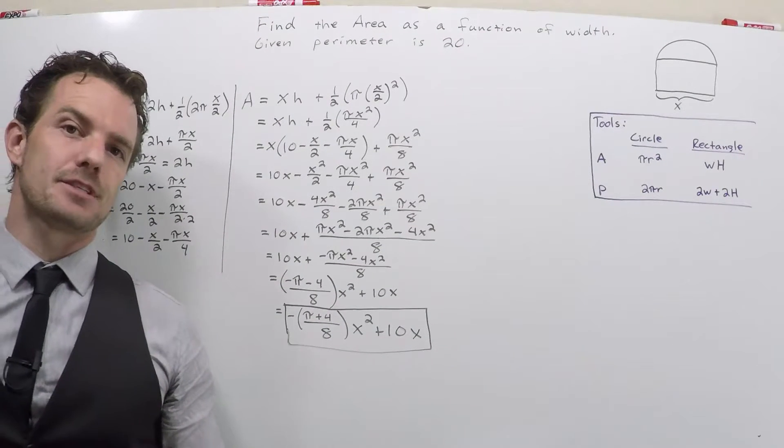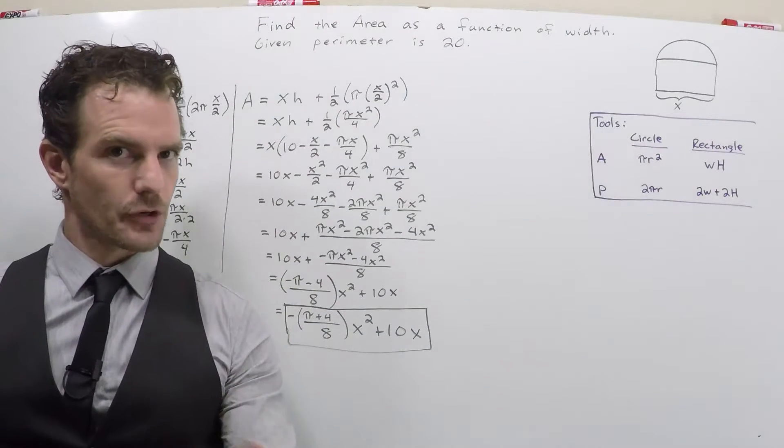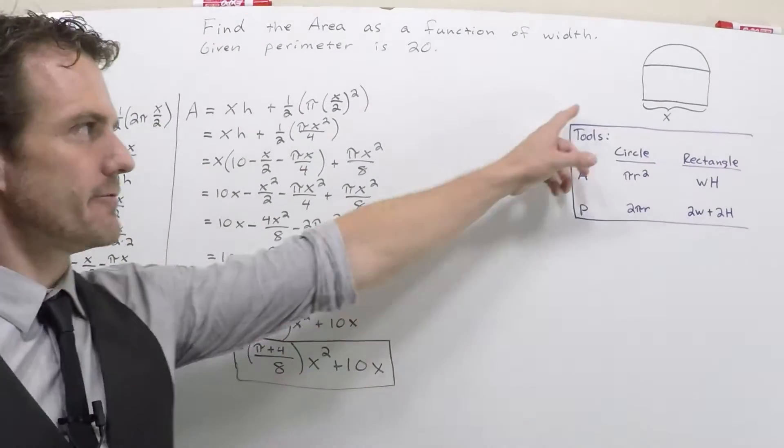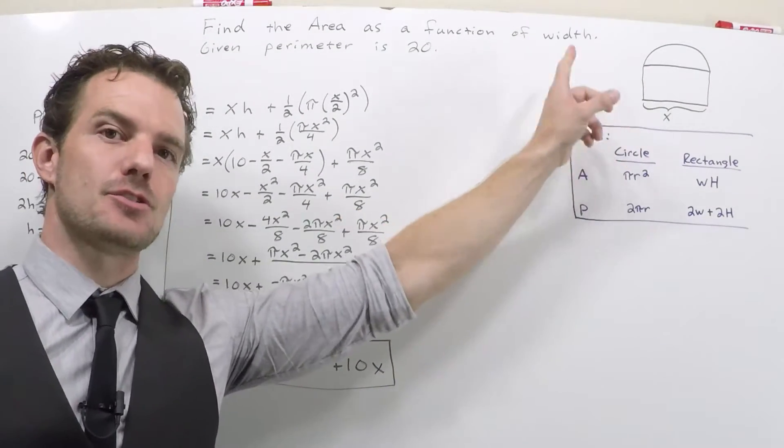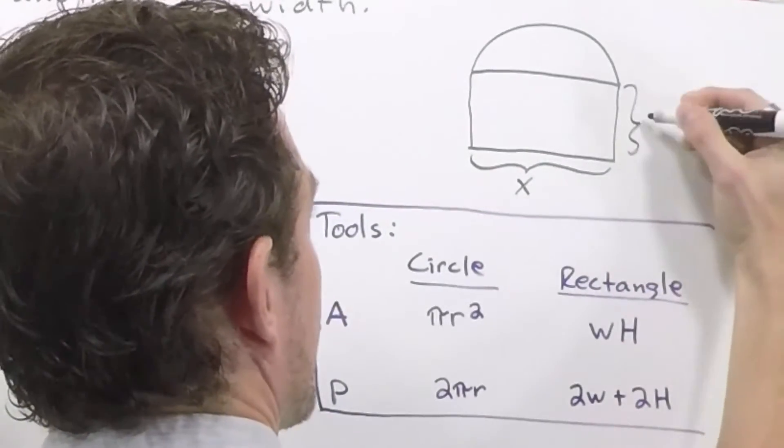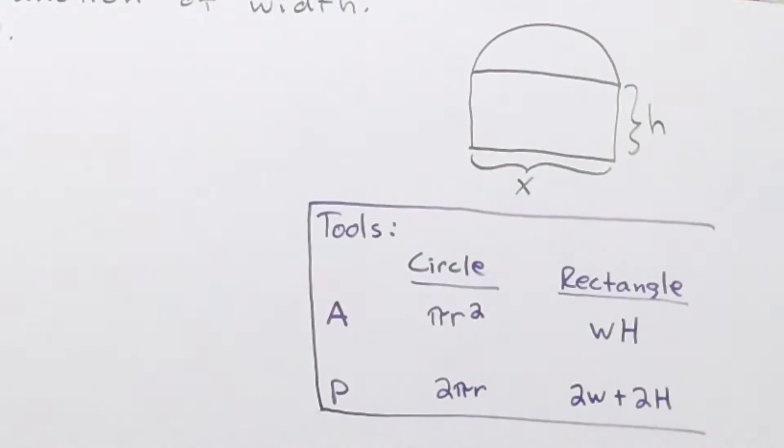This problem took a little bit of effort to get through, but let's work through the parts that got us here. First of all, we have no idea what the height of this Norman window is, so we've got to just assume that the height is some arbitrary height h.